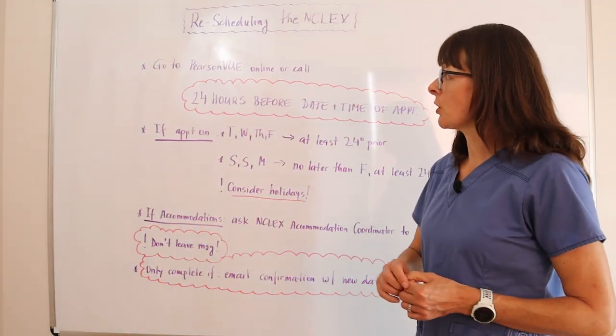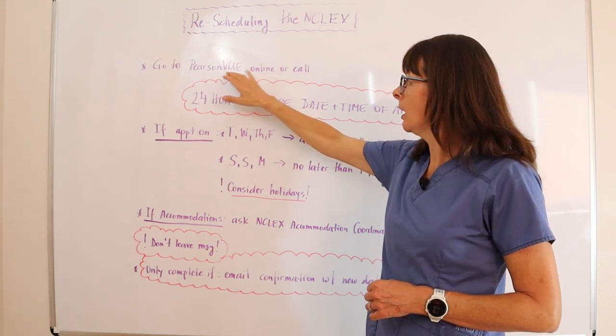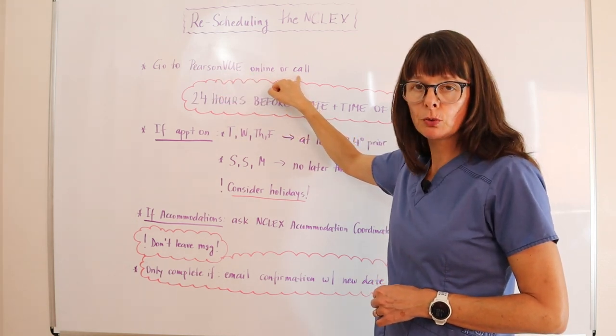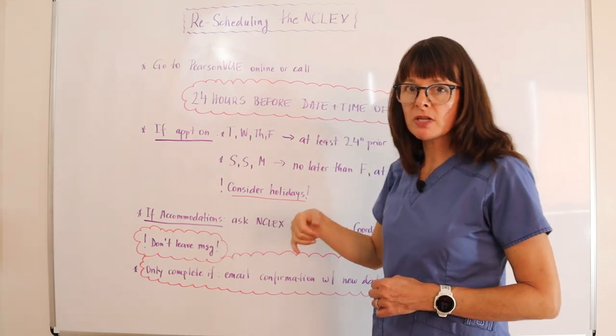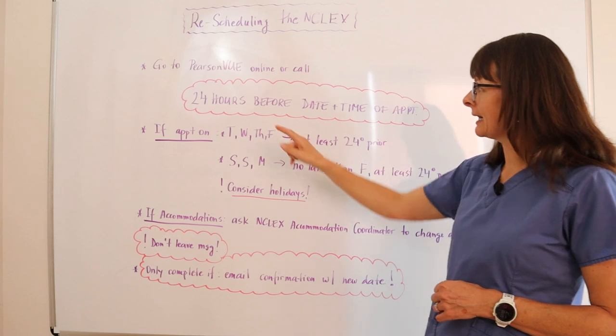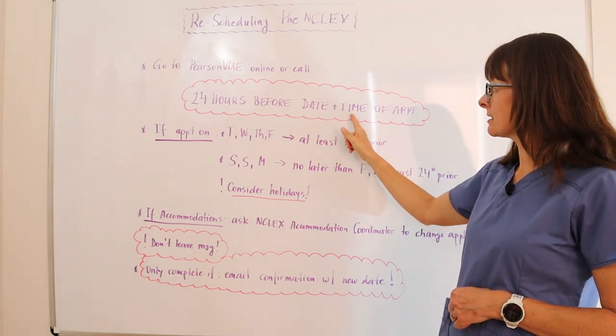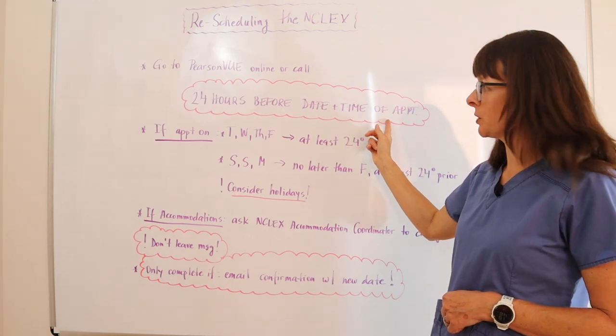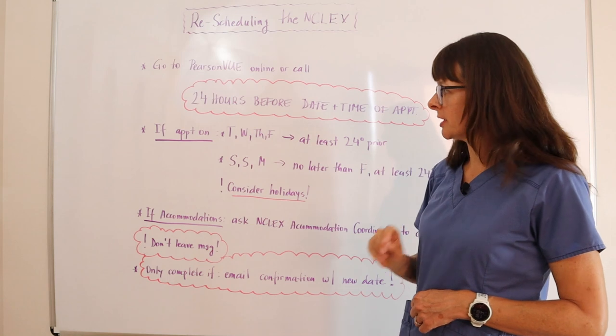First of all, you will have a Pearson VUE account. You can go to that account online or you can call Pearson VUE to attempt to reschedule. However, the attempt to reschedule must be made at least 24 hours before the date and time of your original appointment. Now, there are a few more important things to consider.